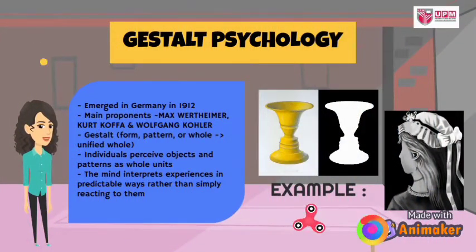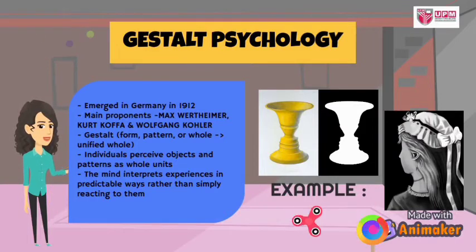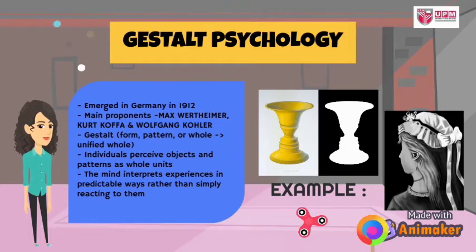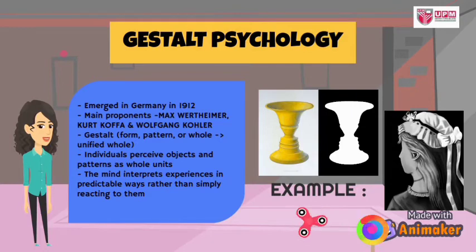Gestalt Psychology emerged in Germany in 1912. Its main proponents were Max Wertheimer, Kurt Koffka, and Wolfgang Kohler. The core idea is that individuals perceive objects and patterns as whole units.